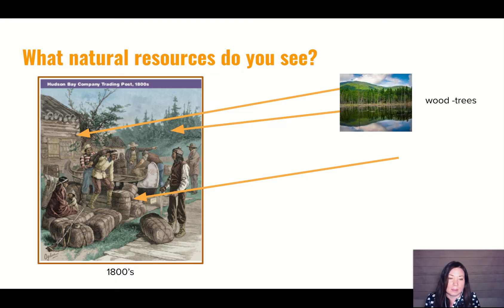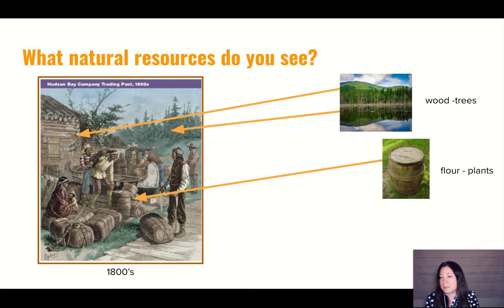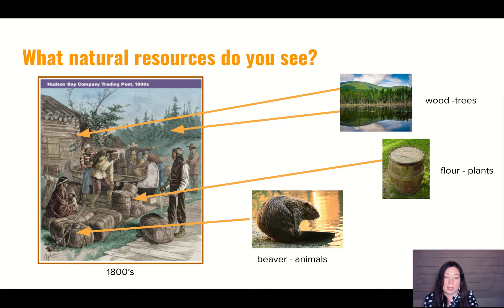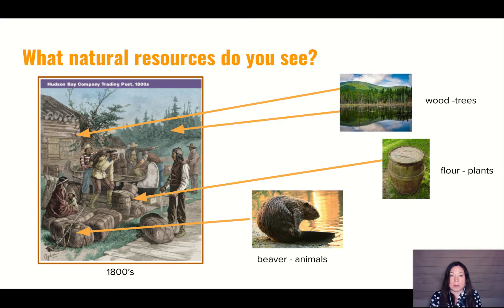I see a barrel again, just like the barrel that we saw in the seal. So I'm going to say that that's flour coming from plants, wheat. Then over here, I see that they've been hunting. So I'm going to say that still in the 1800s, they're using beaver and animals as their natural resources. This is what I can infer from my prior knowledge and from looking and analyzing this picture.